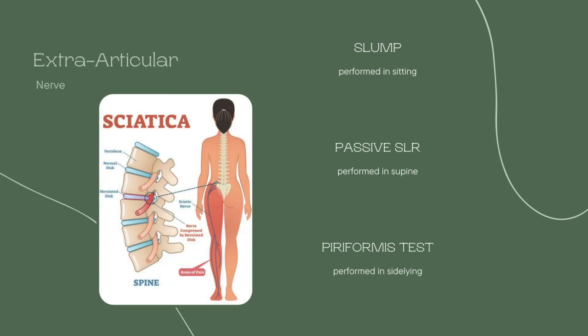Nerve testing — these tests are going to be looking at the sciatic nerve, but in different positions. The piriformis test is in a sidelying position, providing compression on the sciatic nerve. A positive test would be pain or tightness in the buttock or radiating pain down the leg. For the passive straight leg raise, the patient is in supine and you lift their leg — if symptoms are reproduced at less than 70 degrees of hip flexion, that is a positive test.